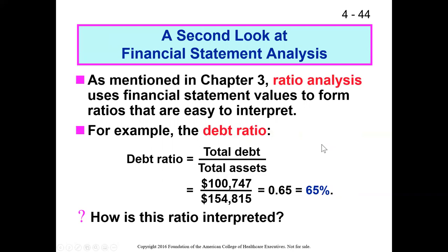The debt ratio is a measure of capital structure. We're looking at what percent of the organization is financed by debt — and the flip side, what portion is financed by equity. We care about the debt ratio because it tells us how financially leveraged the organization is. Debt can give us access to more resources to perform our mission, but it also increases financial risk, because at the end of every month, quarter, or year you have to pay that debt. The higher your debt ratio, the more risk you're taking on.